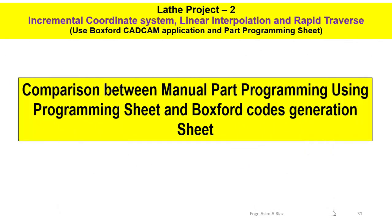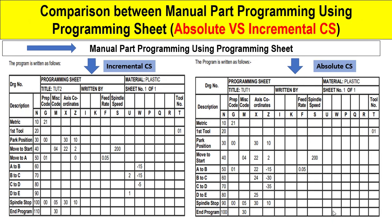In the coming slides, the same activity applies — you have to compare the manual part programming sheet with the software-generated codes. In this slide you can see that the CAD model remains the same, but the difference is the coordinate system. On the left side you can see the programming sheet using incremental coordinate system, while on the right side you can see the programming sheet using absolute coordinate system — you can compare the coding and see the difference, which we will discuss in the physical class.